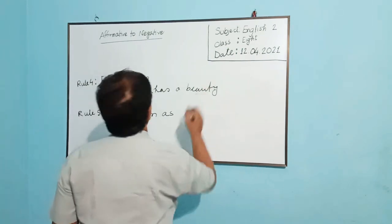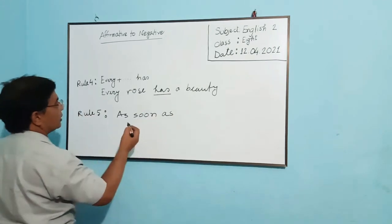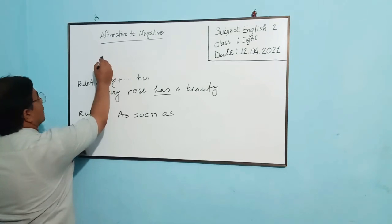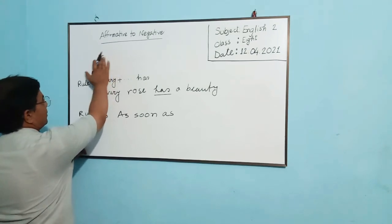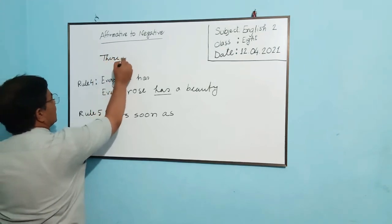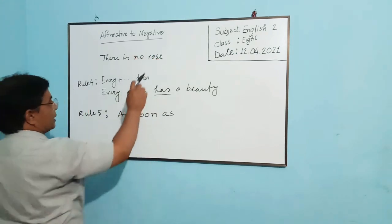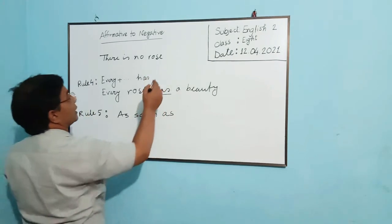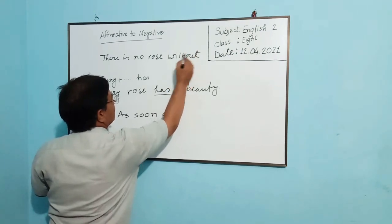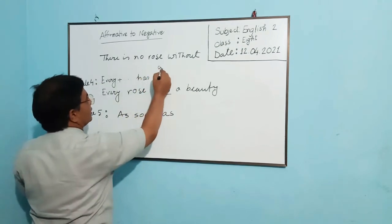Okay, the answer will be—yes, here is has, so we should not use but. We should use, the answer will be here, instead of every, we just write: there is no rose. We will not put here but, we use here without. Because there is has, so there is no rose without a beauty.